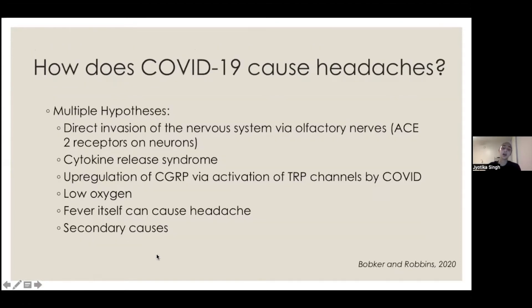You might be wondering how this infection causes headaches. Specific to COVID, there might be some direct invasion of the nervous system. A common symptom of COVID is not being able to taste or smell, and that might be because the virus actually enters the nervous system or brain through the olfactory nerves — through your nose. We do know that neurons have ACE2 receptors on them, which are the receptors that COVID binds to in order to gain entry into the cell to infect it. We also have these receptors all over our lungs, which is why COVID directly affects the lungs as well.